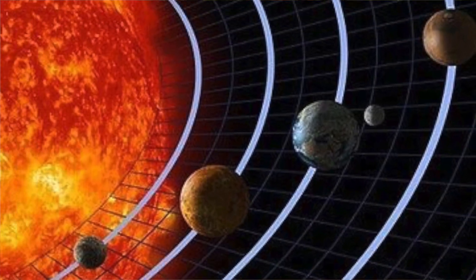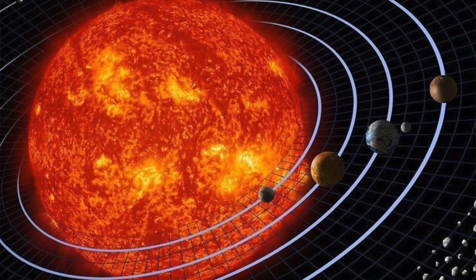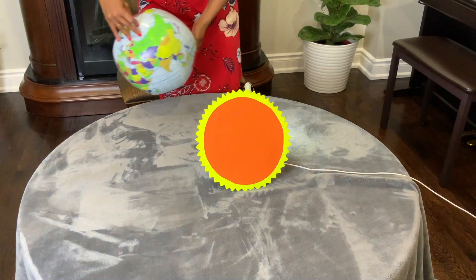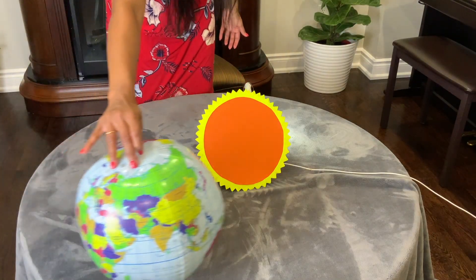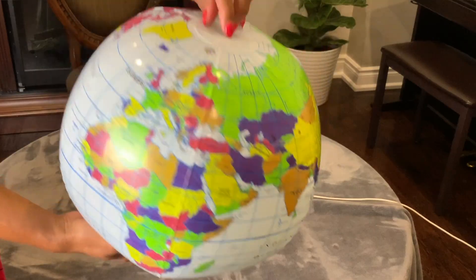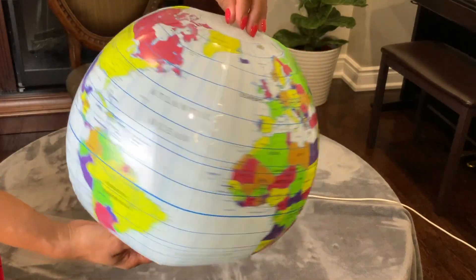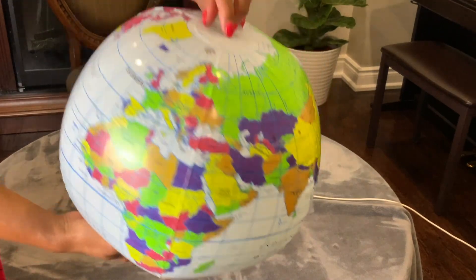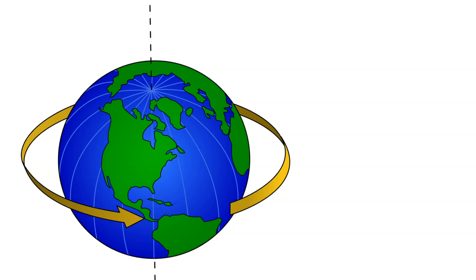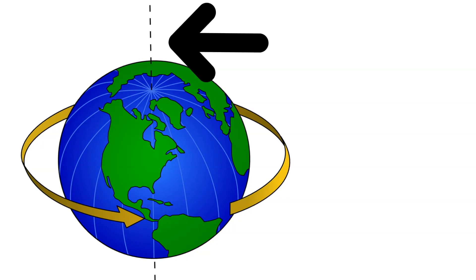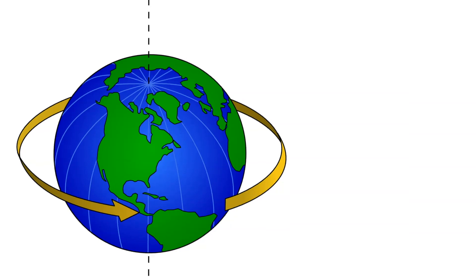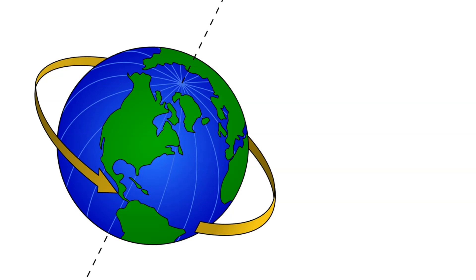We already learned in the past around the world times that the earth goes around the sun. It takes one year for the earth to go around the sun. As it goes around, the earth also spins around as it moves. The imaginary line that the earth spins around is called the axis. The earth does not spin straight up — it spins on a tilt.